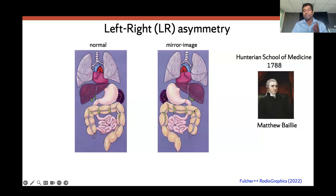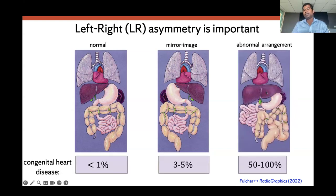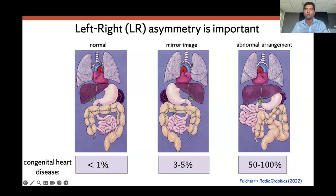Left-right patterning is very important. One in 10,000 people will have this mirror image arrangement. But when you have an abnormal arrangement — for example, a liver or heart in the middle part of the body — those embryos are very affected. The chance of congenital heart disease in those embryos is 50 to 100%, whereas in normal organ positioning it is less than 1%, and for the mirror image it is 3 to 5%. So we try to understand what is the origin of this left-right patterning.